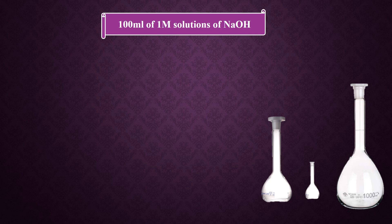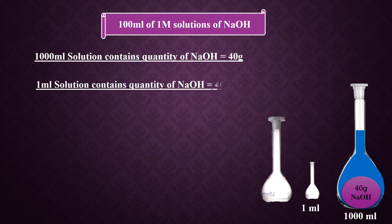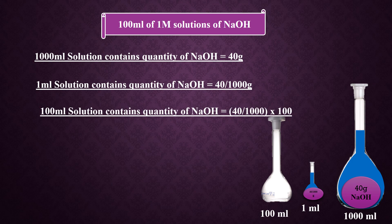Step 1: 1000 milliliters of solution contains 40 grams of sodium hydroxide, which is the molar mass of sodium hydroxide. Step 2: 1 milliliter of solution contains sodium hydroxide equal to 40 divided by 1000. Step 3: 100 milliliters of solution contains sodium hydroxide equal to 40 divided by 1000, multiplied by 100.